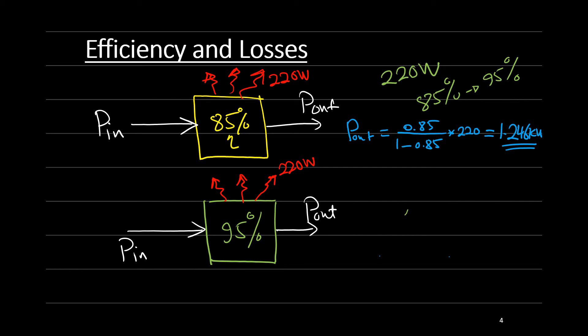If we try to calculate the output power for the second converter, you will find that P out for the second converter is equal to 0.95 over 1 minus 0.95 times 220 losses. And this will be 4.18 kilowatt. So just compare the power, the output power between these two converters.